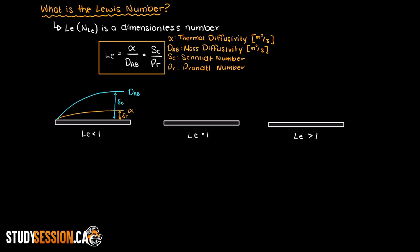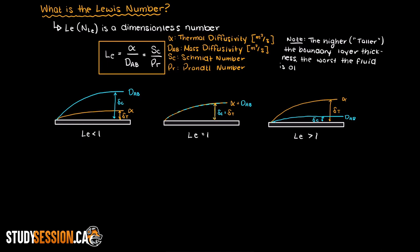Visually if we have an incoming stream hitting a flat plate this is what we get for various Lewis numbers. If you are unsure what boundary layers are I will leave a link in the description below to aid your understanding. At high Lewis numbers we have greater thermal transfer than mass transfer and at low Lewis numbers we have greater mass transfer than thermal transfer.